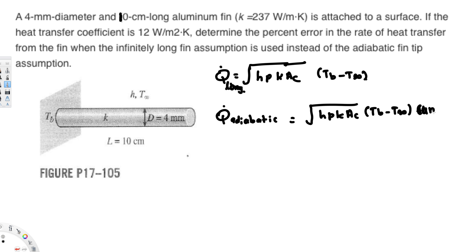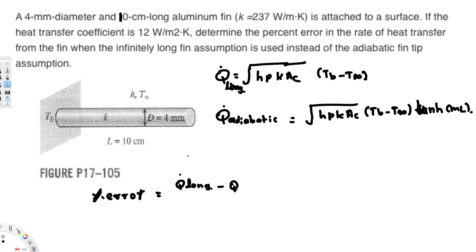We have these two equations and we need to find the percentage error. Since we are using the long fin assumption instead of the adiabatic assumption, the percentage error formula is: (Q̇_long − Q̇_adiabatic) / Q̇_adiabatic.